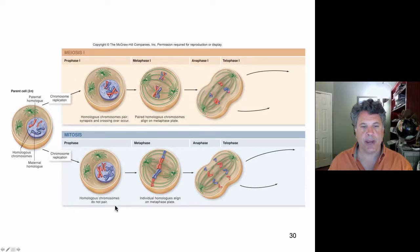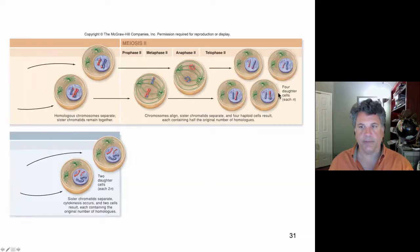Basically mitosis goes through a process which produces two daughter cells that are identical to each other. Whereas meiosis will result in four daughter cells, each of which are genetically unique or different from each other. So you can examine that process on your own.